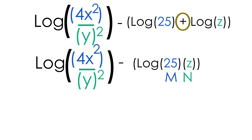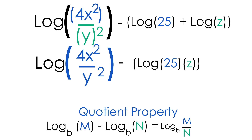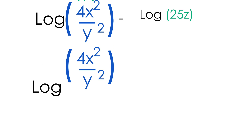Now this expression can be condensed even further. We have 2 logs with a minus sign in the middle, so we use the quotient property again. Let the 4x²/y² be our m and 25z be our n, and we can rewrite these as one single log of m over n — giving us log of (4x²/y²) divided by 25z.